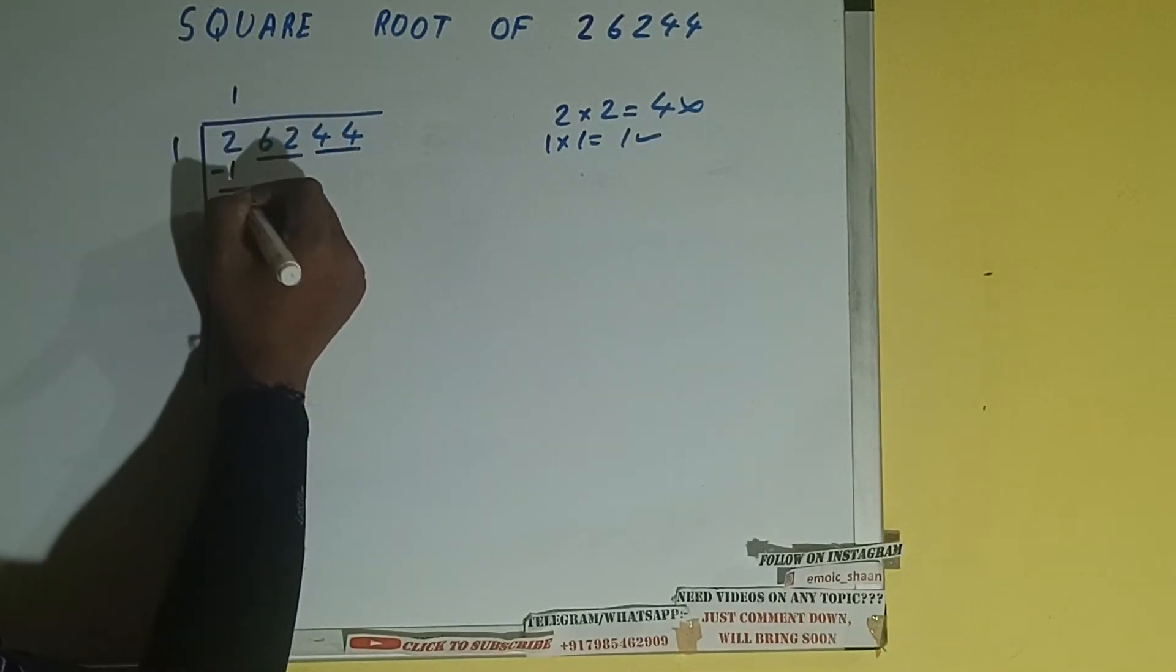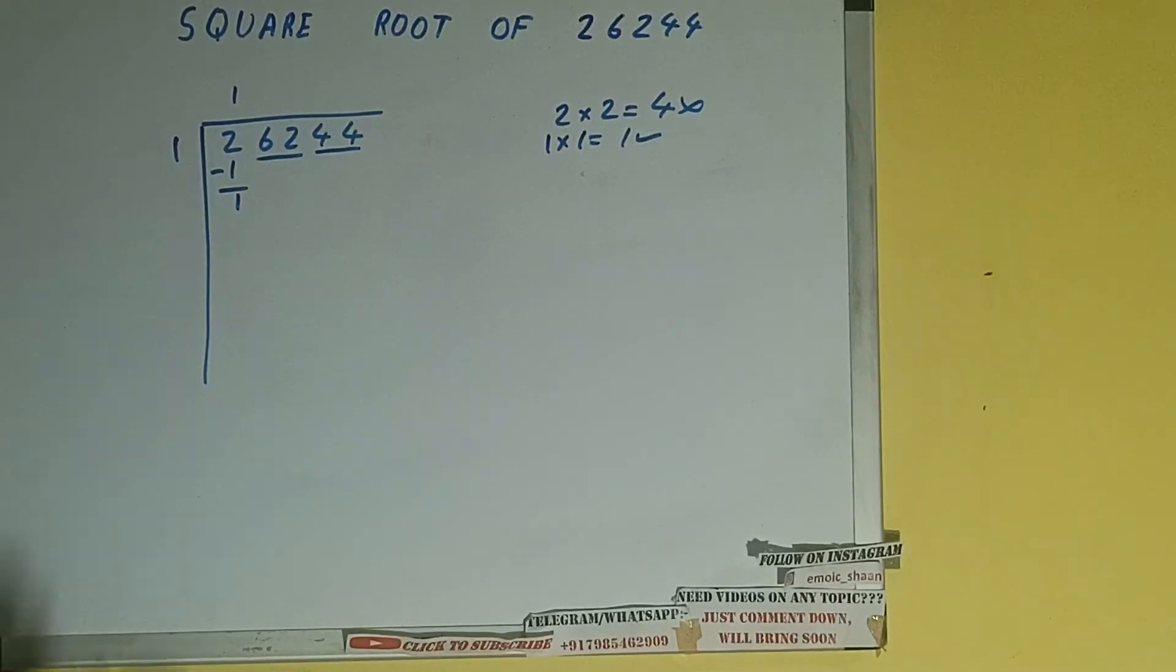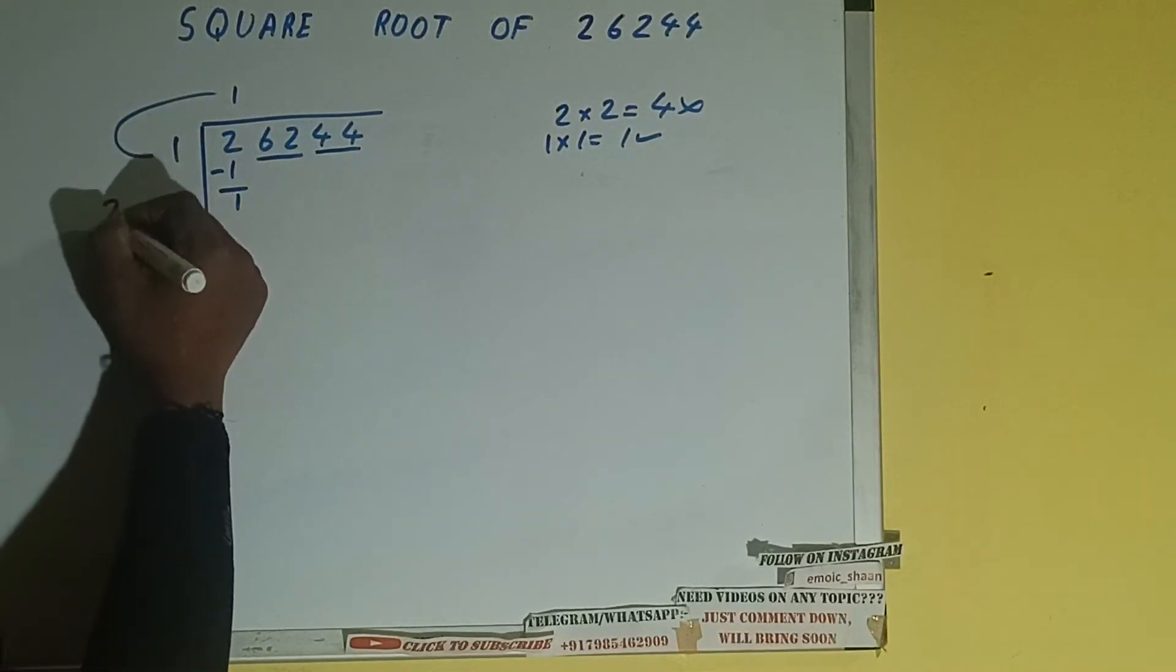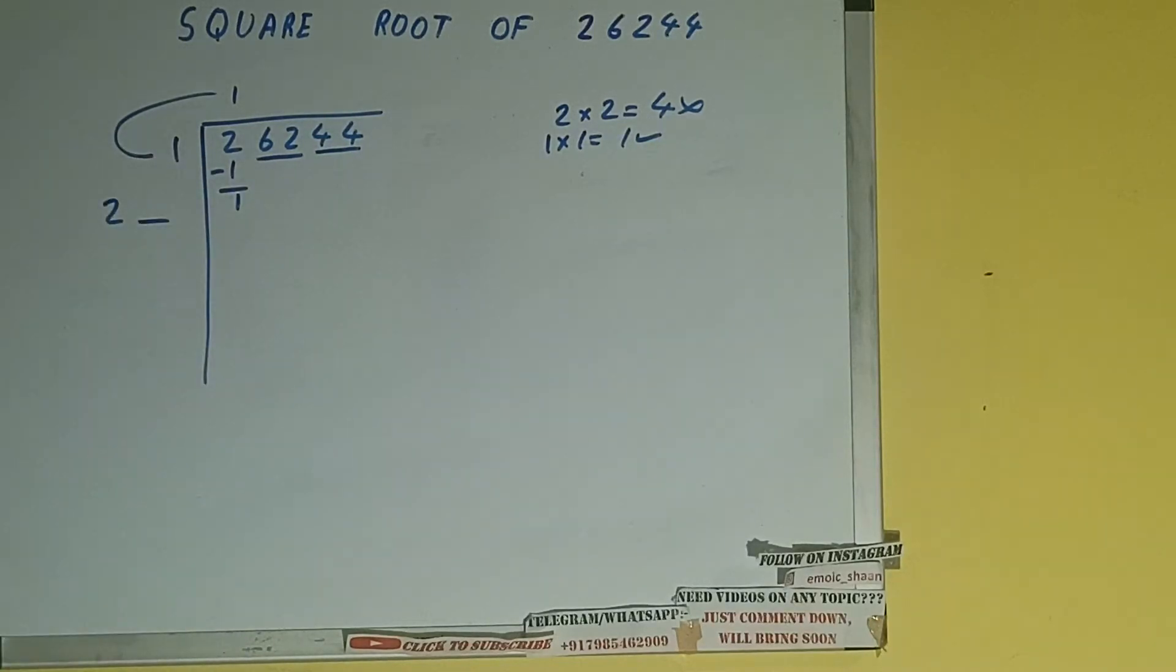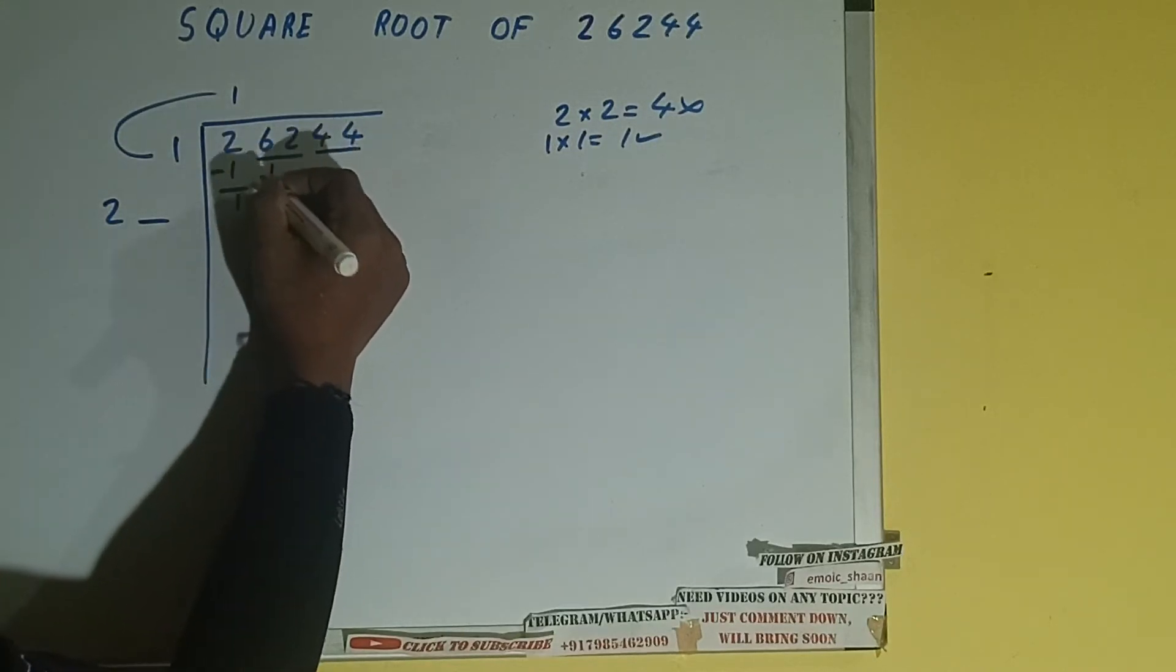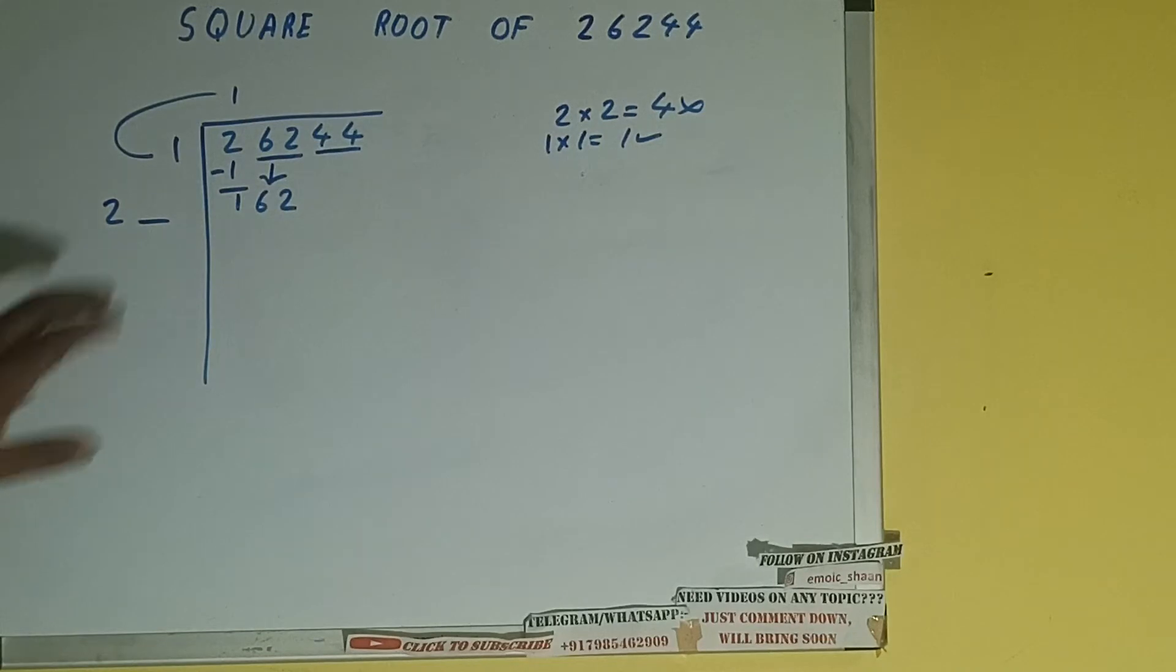So one here and one here. One subtract one will be left. We did one into one, so add both. So 1 plus 1 will be 2. Write it here and keep a digit extra, and this number we need to make it big.